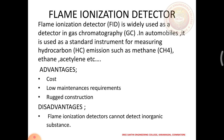Then flame ionization detector. The flame ionization detector is widely used as a detector in gas chromatography. In automobiles, it is used as a standard instrument for measuring hydrocarbon emissions such as methane, ethane, acetylene, etc. Advantages of this detector include low cost, low maintenance requirements, and rugged construction. A disadvantage of this system is that the detector cannot detect inorganic substances.